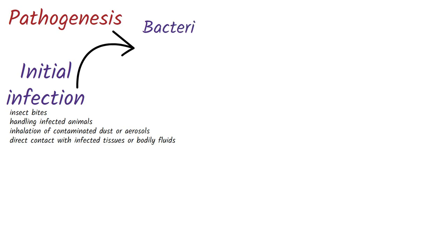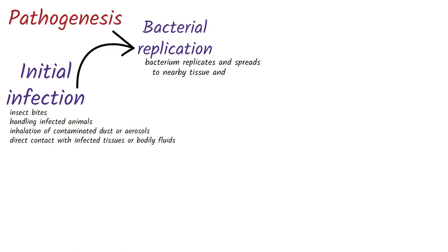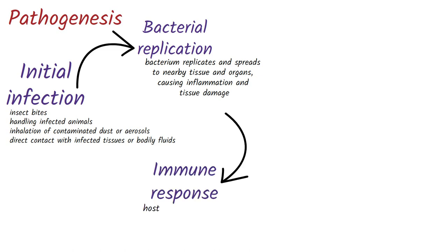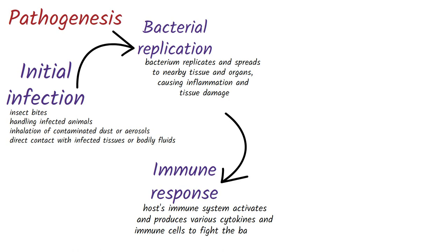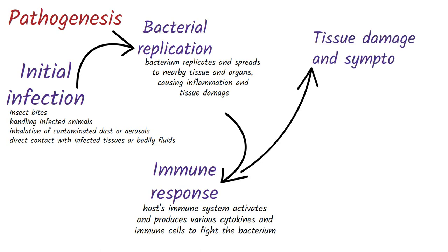The second step is bacterial replication. Once inside the host, the bacterium replicates and spreads to nearby tissues and organs, causing inflammation and tissue damage. The third step is immune response. In response to the infection, the host immune system activates and produces various cytokines and immune cells to fight the bacterium. The fourth step is tissue damage and symptoms. As the bacterium continues to replicate and spread, it causes tissue damage and the release of toxins, leading to symptoms of Tularemia.